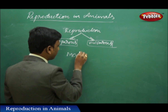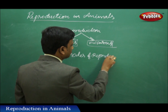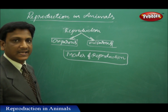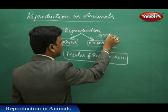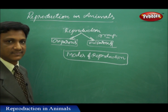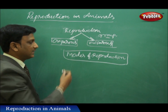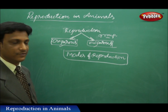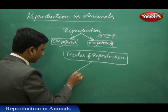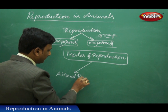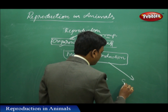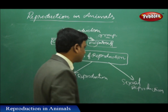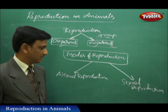Now let us see the different modes of reproduction. Don't get confused — oviparous and viviparous are not different types of reproduction; they are groupings of animals based on the method in which they give birth to the young ones. Both animals undergo sexual reproduction, but in the production of babies, the difference is oviparous versus viviparous. The two different modes of reproduction are asexual reproduction and sexual reproduction.